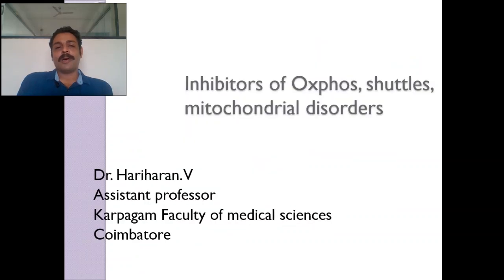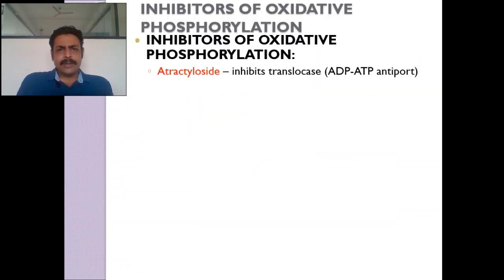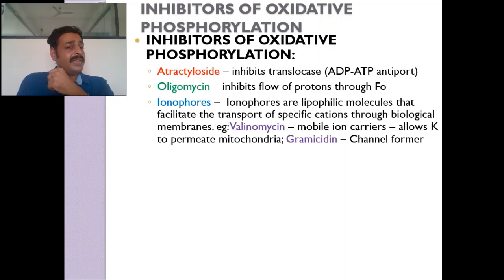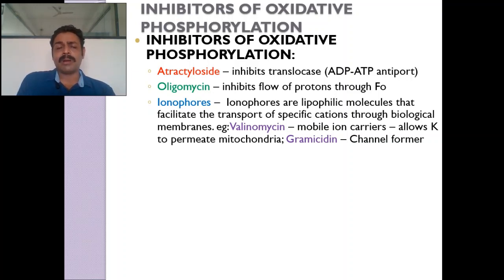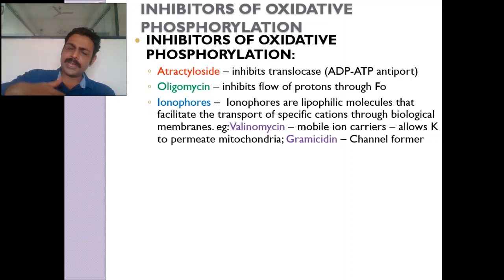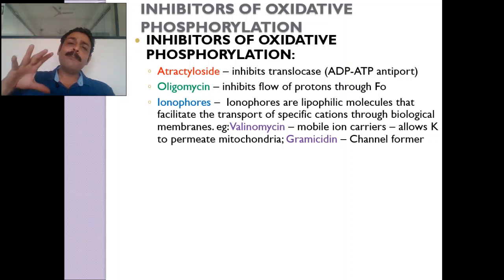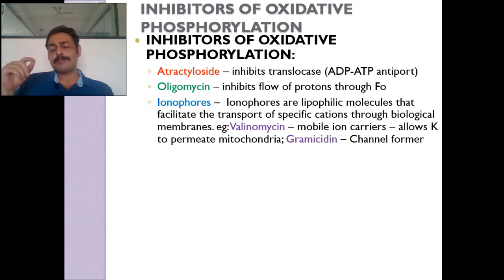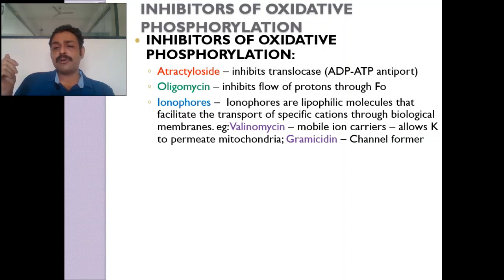What are the inhibitors? Acetyl oxide and oligomycin are the main inhibitors. Ionophores — membrane permeability is very important. The inner mitochondria should not be permeable to H⁺; if it is freely permeable, hydrogen won't come via ATP synthase. Ionophores are certain substances which can increase the permeability of certain ions. For example, valinomycin allows potassium to cross; gramicidin is a channel former.